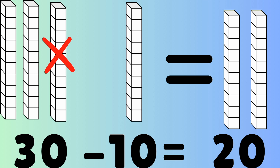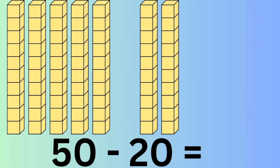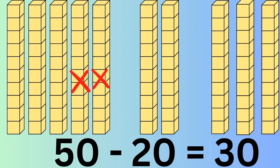Next up, there's fifty blocks of ten minus twenty blocks of ten. So fifty minus twenty is thirty. There's three blocks of ten left.